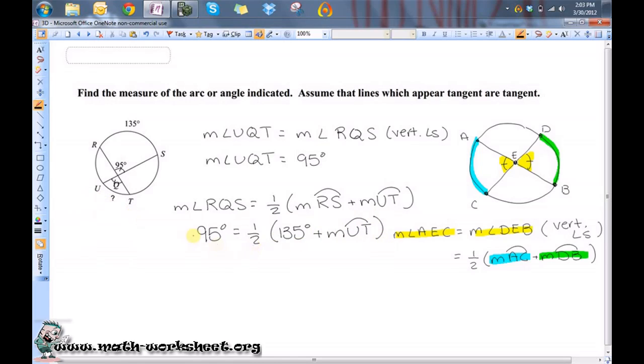So now I just need to do some algebra. Let's multiply both sides by two, so I'll get 190 degrees is equal to 135 degrees plus the measure of RQT. Subtract 135 and now I'll get 55 degrees is equal to the measure of RQT.